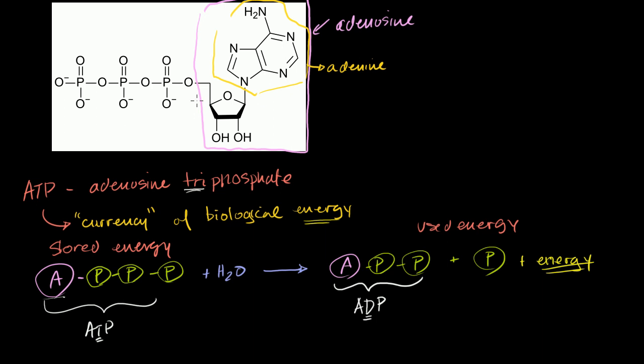And then the other part right here is ribose, which you might also recognize from RNA, ribonucleic acid. That's because you have ribose in the whole situation. But I won't go into that much. But ribose is just a 5-carbon sugar.